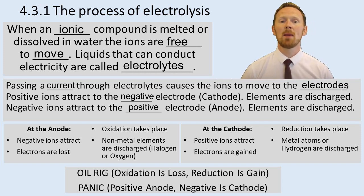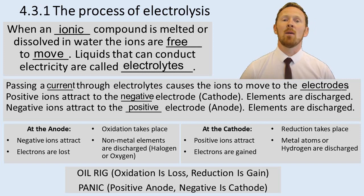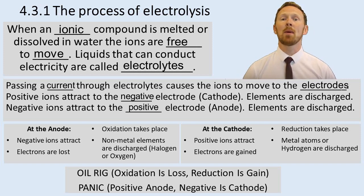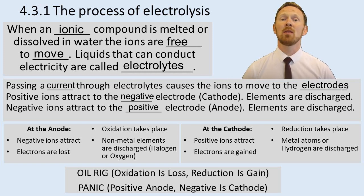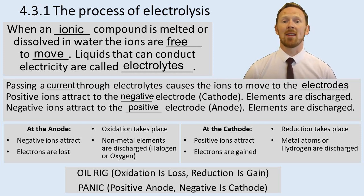That means non-metal elements are discharged at the anode. Now, if there are halide ions in solution, it will be the halogen element that's discharged. But if there isn't a halide ion there, then it's oxygen gas that's given off at the anode.